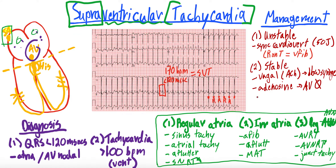Usually the above things work, but you can also use beta blockers and calcium channel blockers. These also slow down conduction through the AV node — they don't block it completely like adenosine, but they'll slow it down and hopefully send the patient back into a regular rhythm.